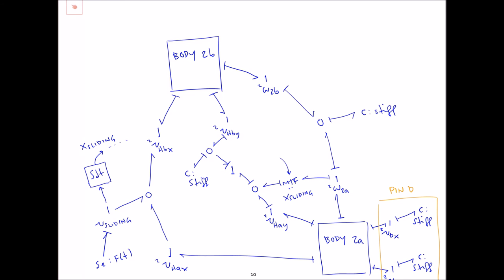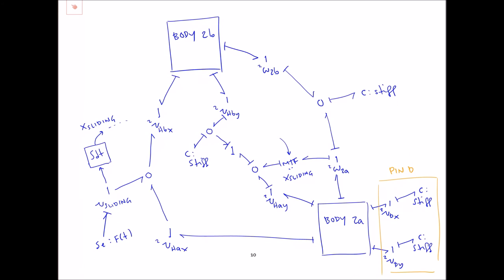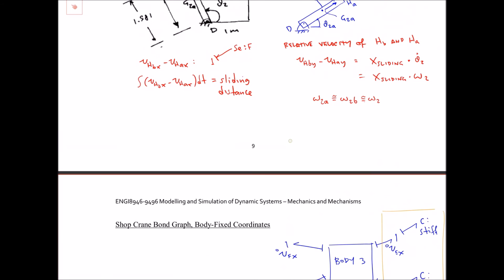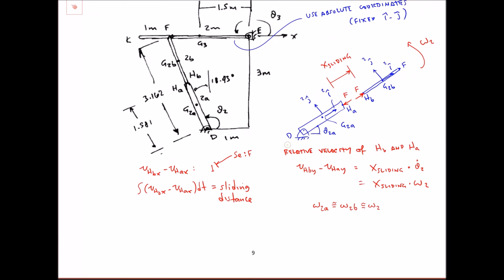If I run this simulation now I should have a pendulum for the horizontal boom oscillating under gravity, and the rod inside the tube also acting like a pendulum falling about point D. Depending on the actuation force, the rod will fly out of the tube. All that's remaining now is to handle the pin connection at point F.